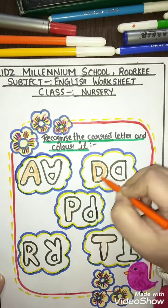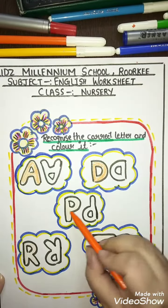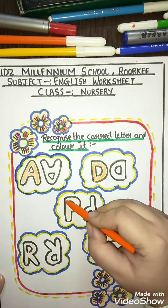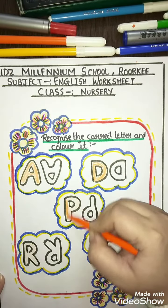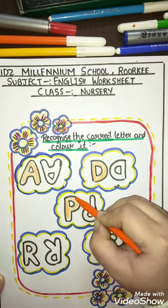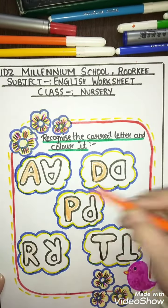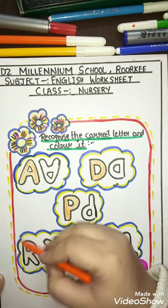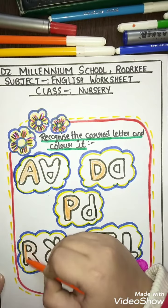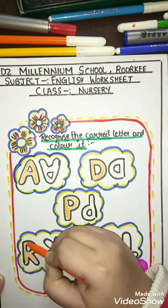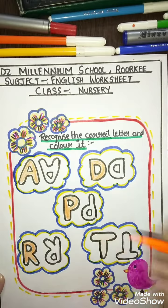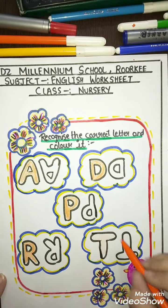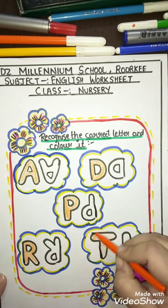Now which alphabet is this? P — P for parrot. So you will color the correct P like this. Now which alphabet is this? R — R for rabbit. So you will color the correct R like this. Now which alphabet is this? T — T for tiger. So you will color the correct T like this.